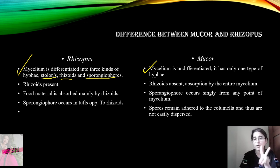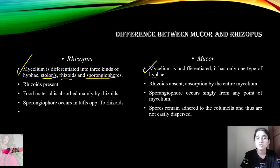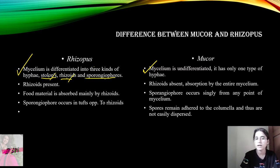If you have two slides — one is Rhizopus and the other is Mucor — and you want to recognize Rhizopus: if you have Stolons, Rhizoids, or Sporangiophores, that means it will be Rhizopus. If the mycelium is undifferentiated with only one type, then it will be Mucor.